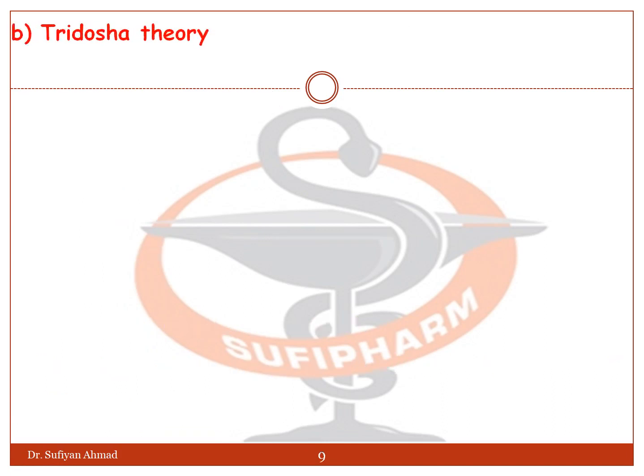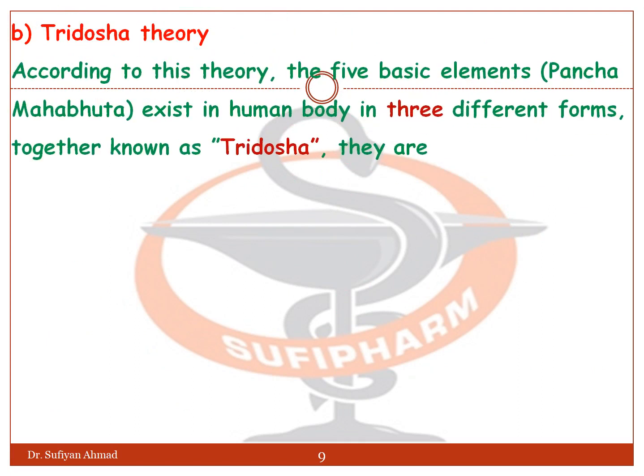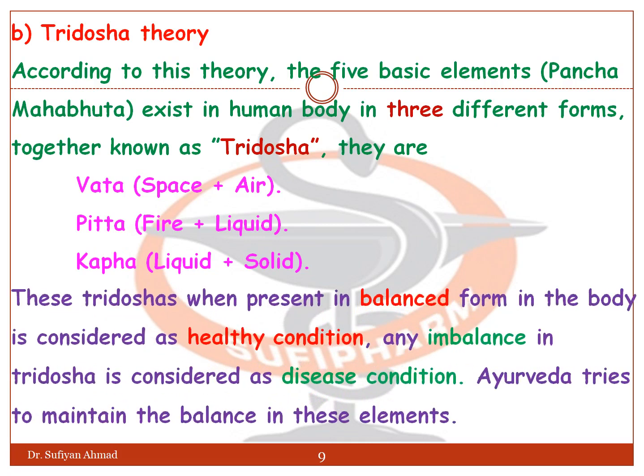Next is the Tridosha theory. According to this theory, the five basic elements, Pancha Mahabhuta, exist in the human body in three different forms together known as Tridosha. They are Vata, Pitta, and Kapha. When these Tridosha are present in balanced form in the body, it is considered a healthy condition. Any imbalance in the Tridosha is considered a disease condition, and Ayurveda tries to maintain the balance in these elements.